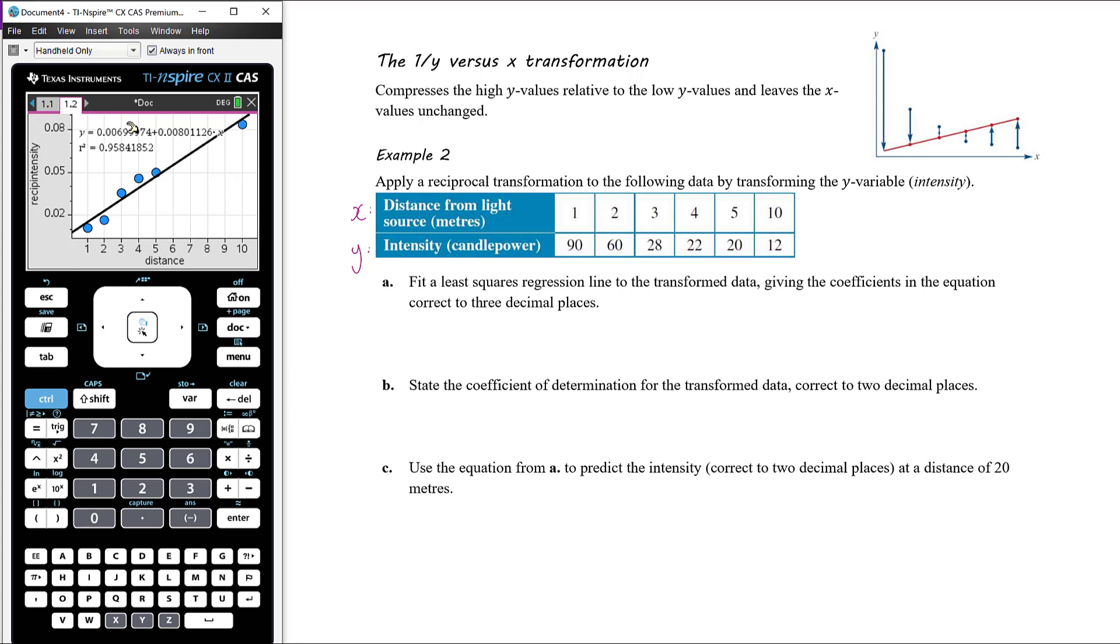We want to give the coefficients correct to three decimal places in the regression equation. Remember, it's not y, it's 1 over y now, reciprocal of y. And y is intensity, so my equation is going to be 1 over intensity equals, now we want three decimal places here, so that is 0.007 plus 0.008 times distance.